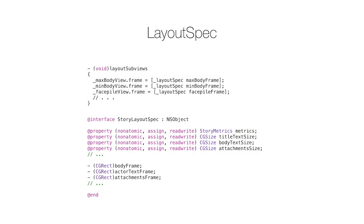Next up we have the layout spec. A layout spec is just an NSObject that answers queries for frames. It has very few dependencies, and the dependencies are very simple. The inputs are just sizes, metrics, and maybe some light configuration, and it comes back with frames. We've separated out anything that would normally go in a large bloated layoutSubviews method into its own class. This class has fewer dependencies, it's isolated so you only have to think about layout while you're working on it. It also means layout specs are totally standalone and don't depend on anything from UIKit, so I can instantiate one in a unit test and verify that it's correct.